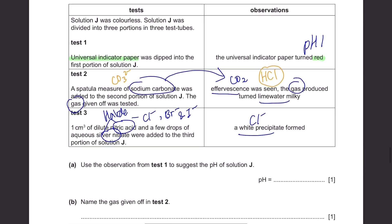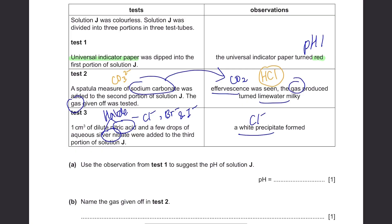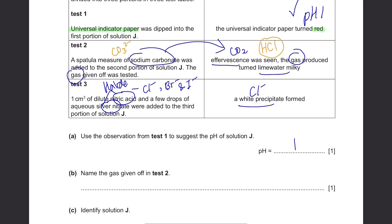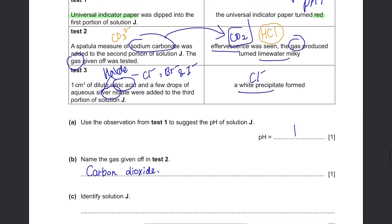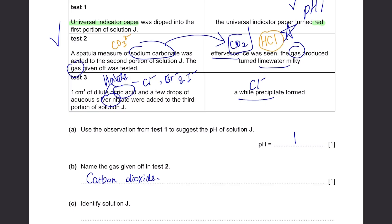Part A. Use the observation from test 1 to suggest the pH of solution J. pH, like I just said, should be pH 1. Part B. Name the gas given off in test 2. It's carbon dioxide. Part C. Identify solution J. We found it out from test 2 that it's hydrochloric acid.